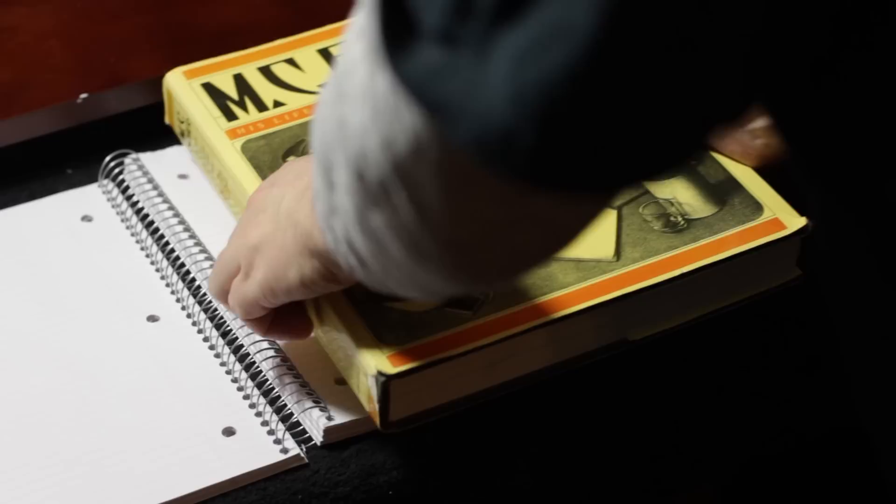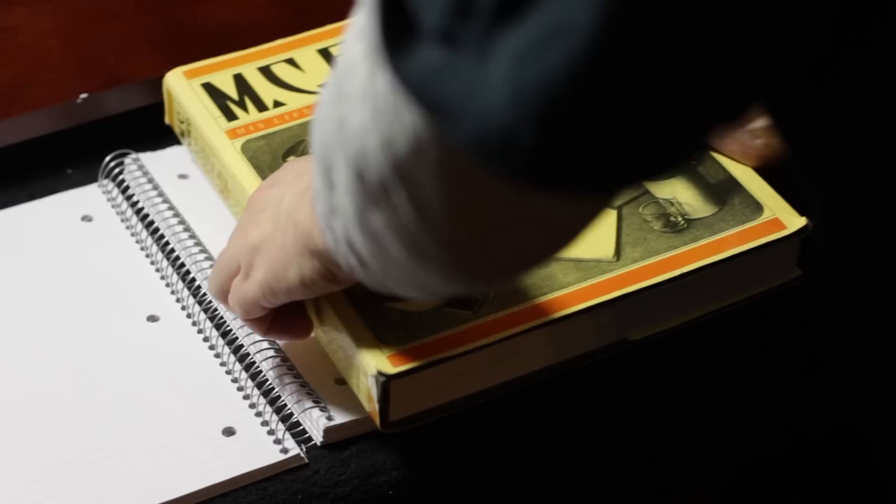Now grab a small piece of sponge or a paper towel and apply an even coat on the bottom portion of the notebook. Make sure to leave the top portion alone. That can move freely.